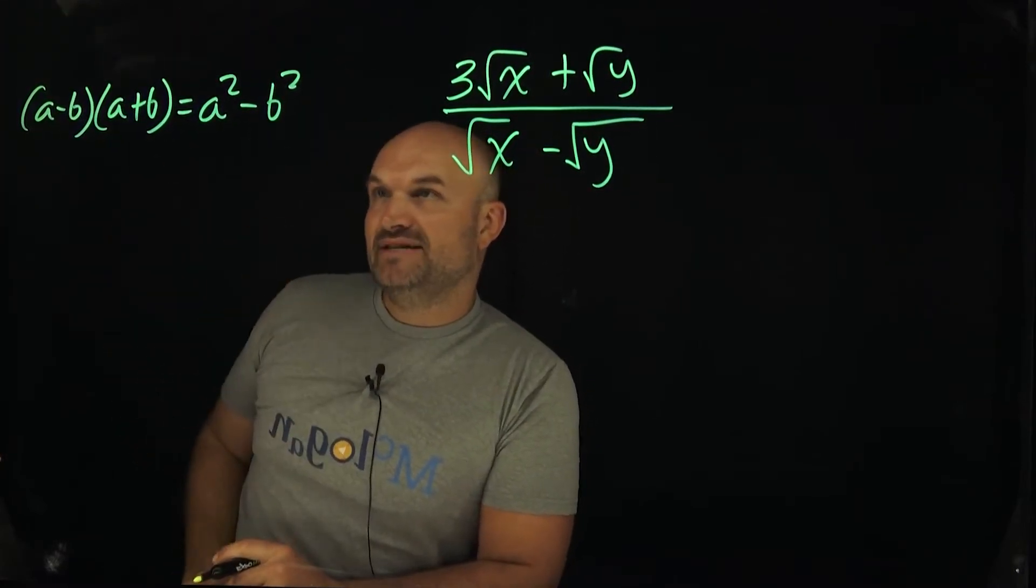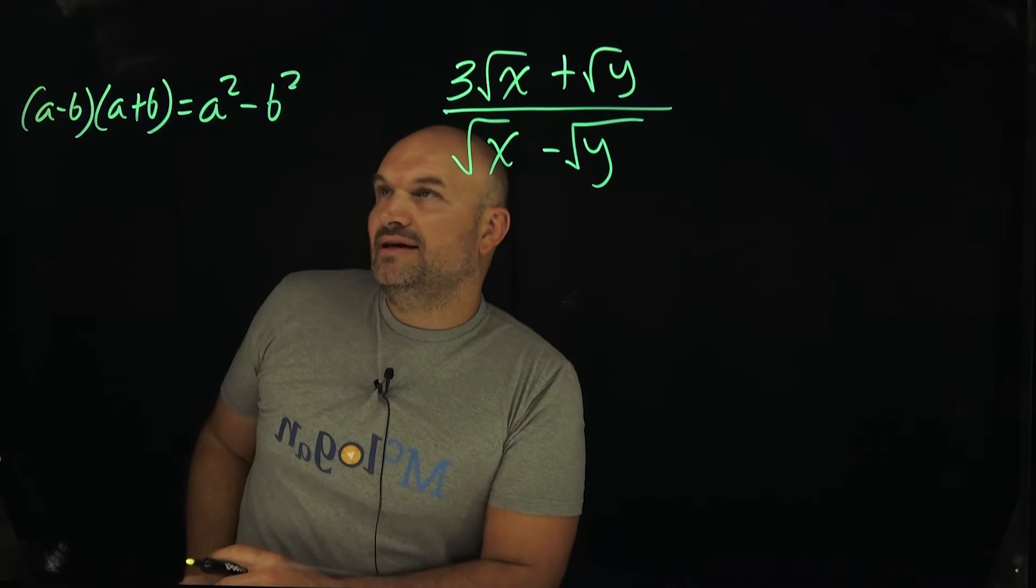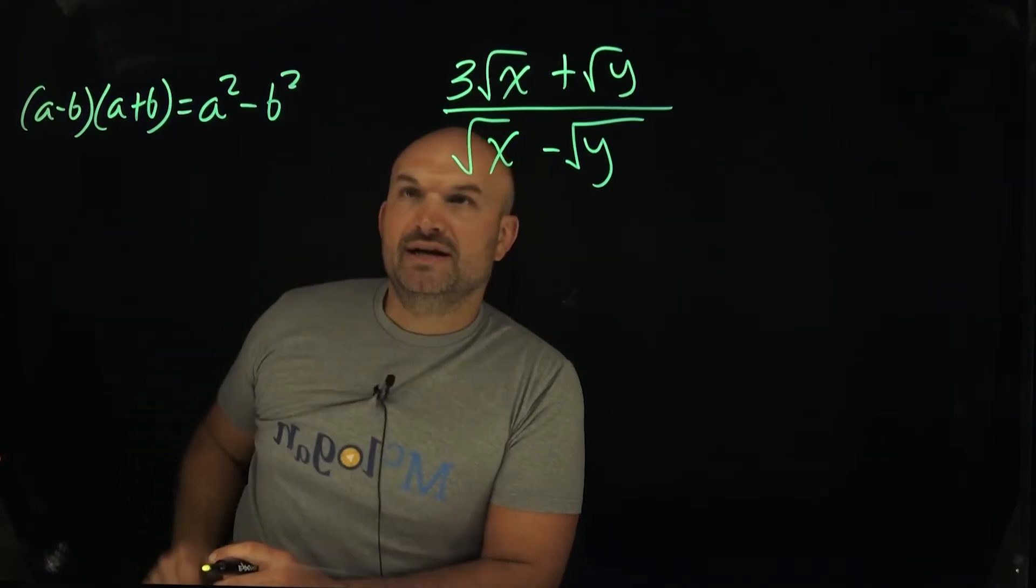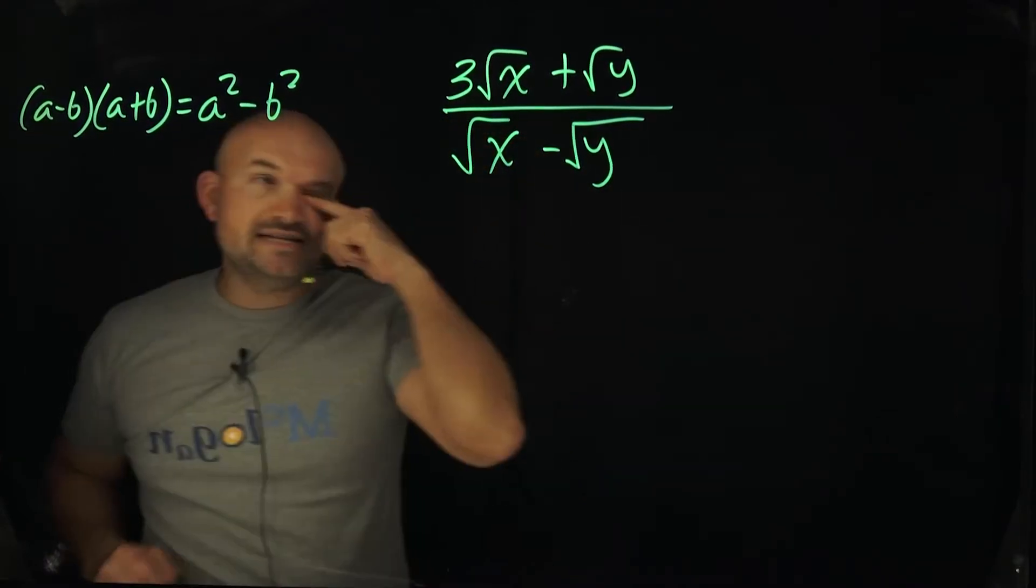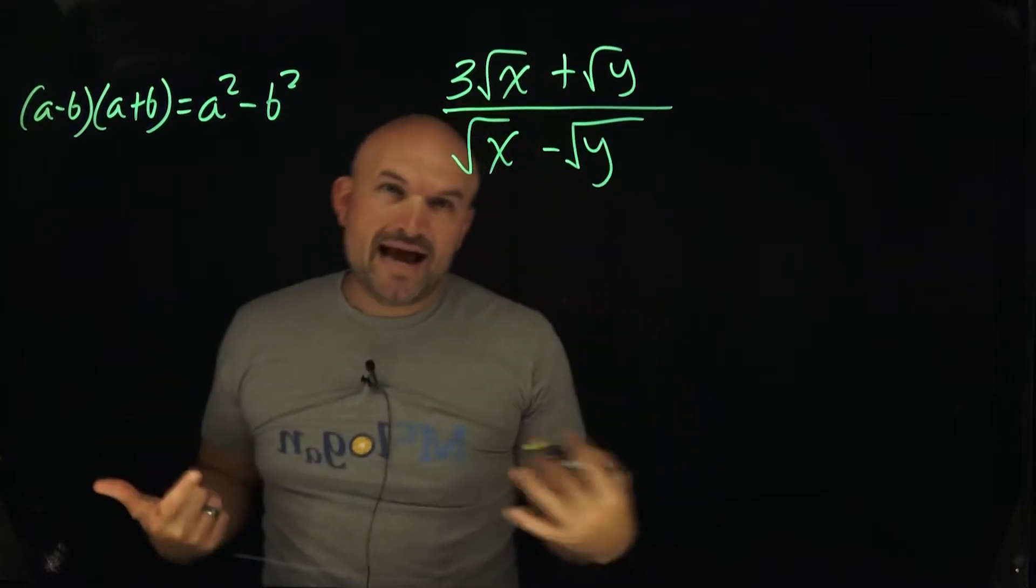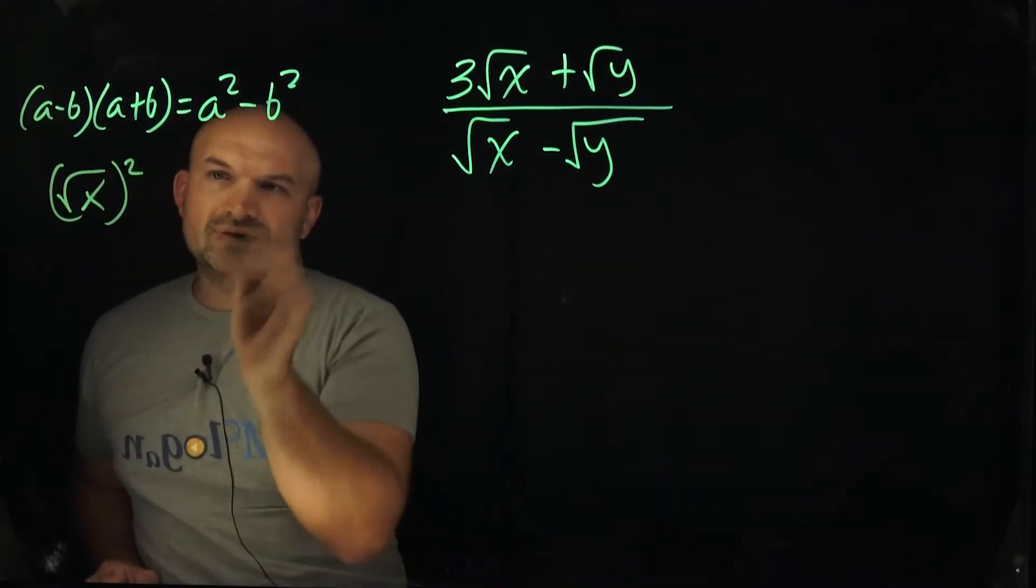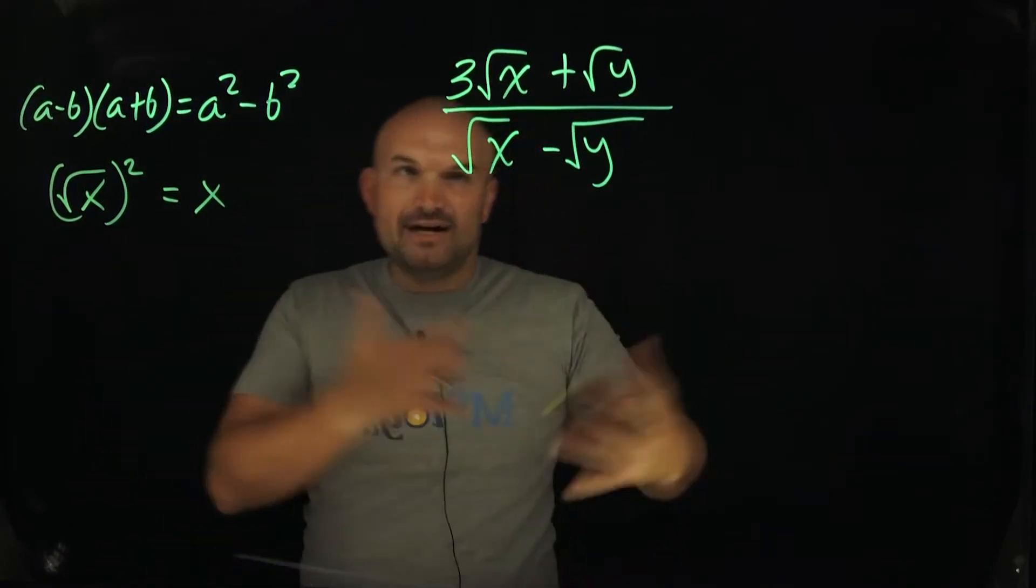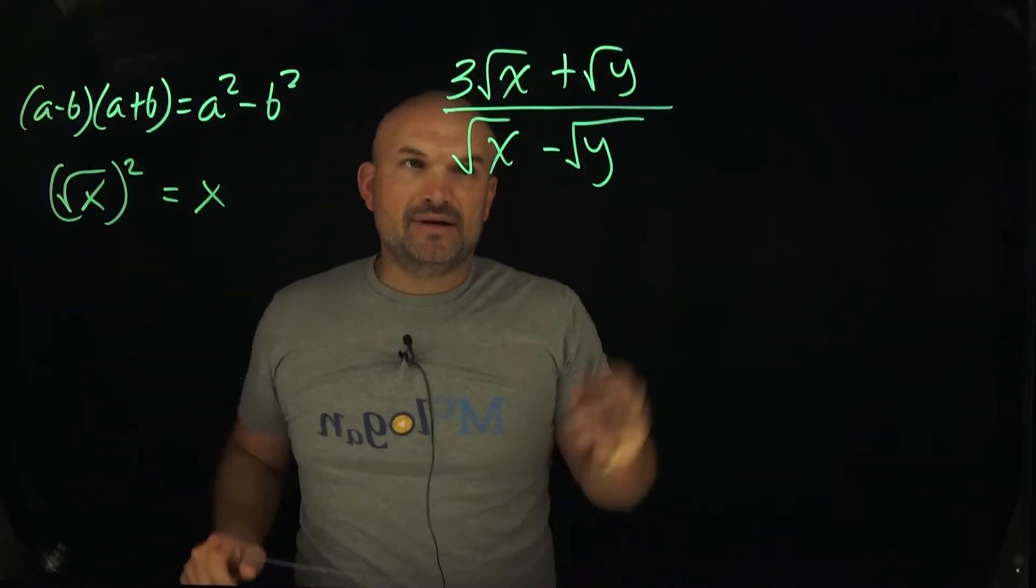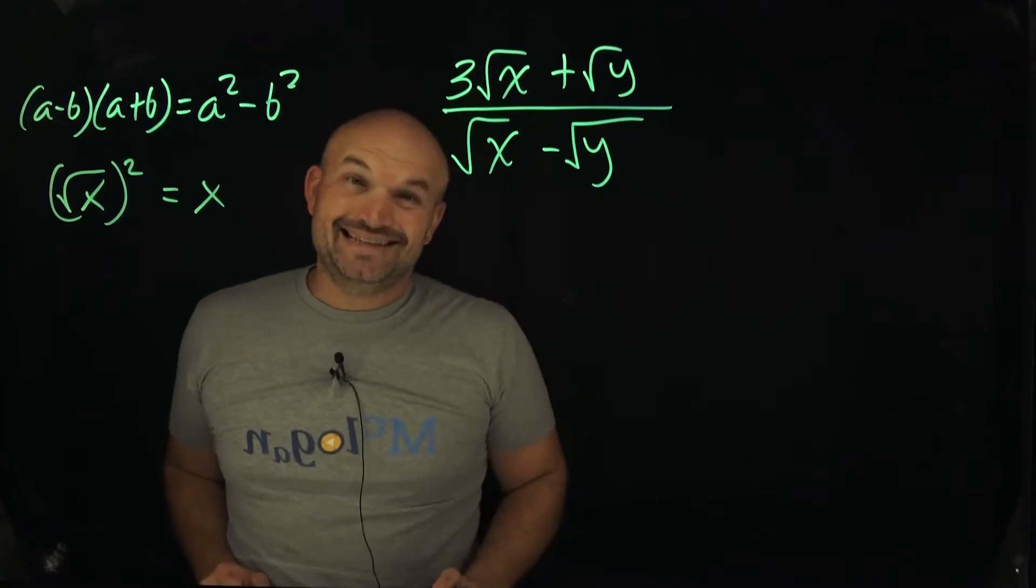Now you might be thinking, well, how is that pattern going to be helpful over here? Well, the reason why that's going to be helpful here is because if I'm squaring radicals, what happens when we square radicals? If I take the square root of x, quantity squared, what is that going to give me? An x, right? And so the purpose here of rationalizing the denominator is to get rid of our radicals in the denominator.